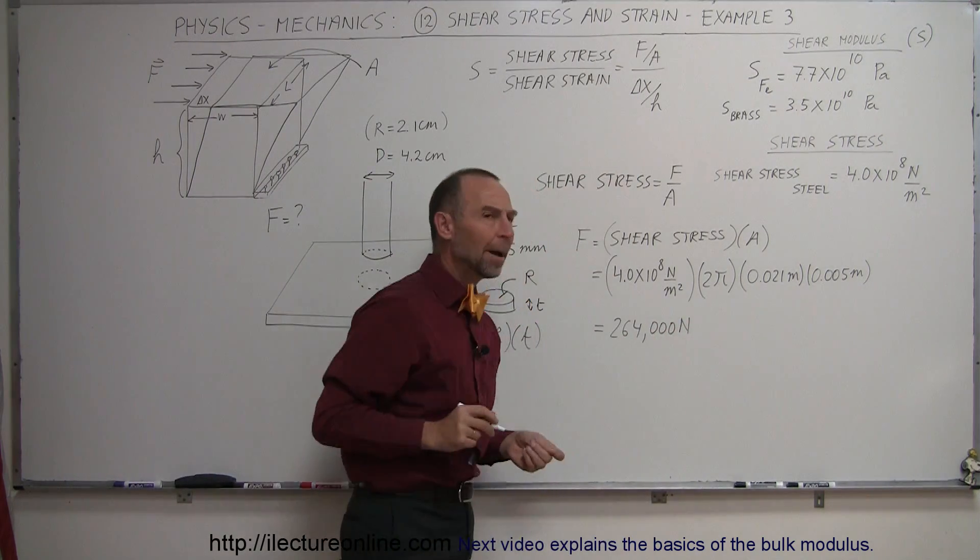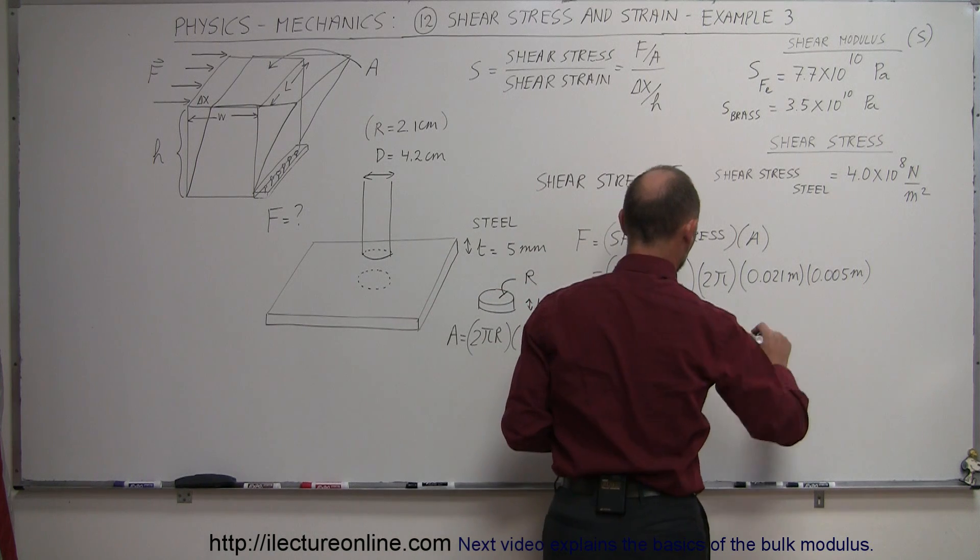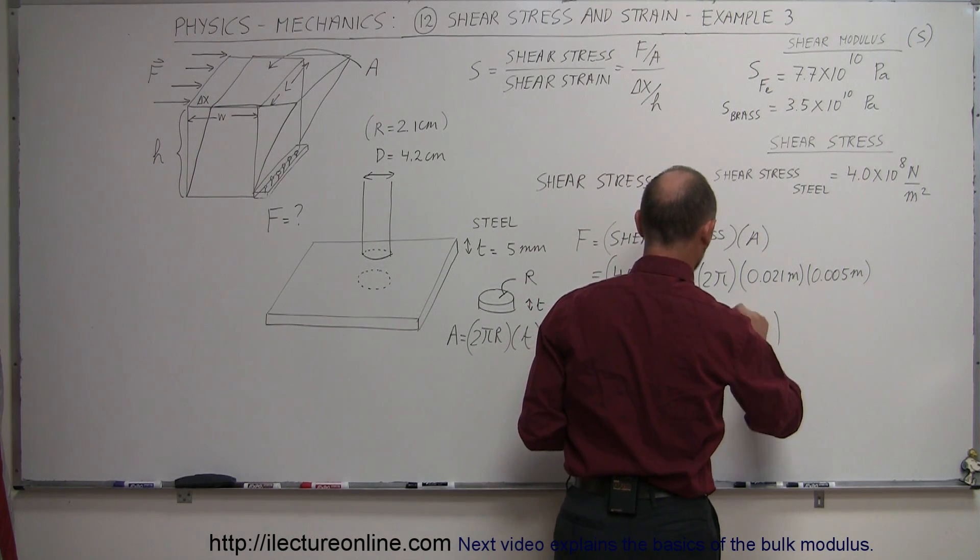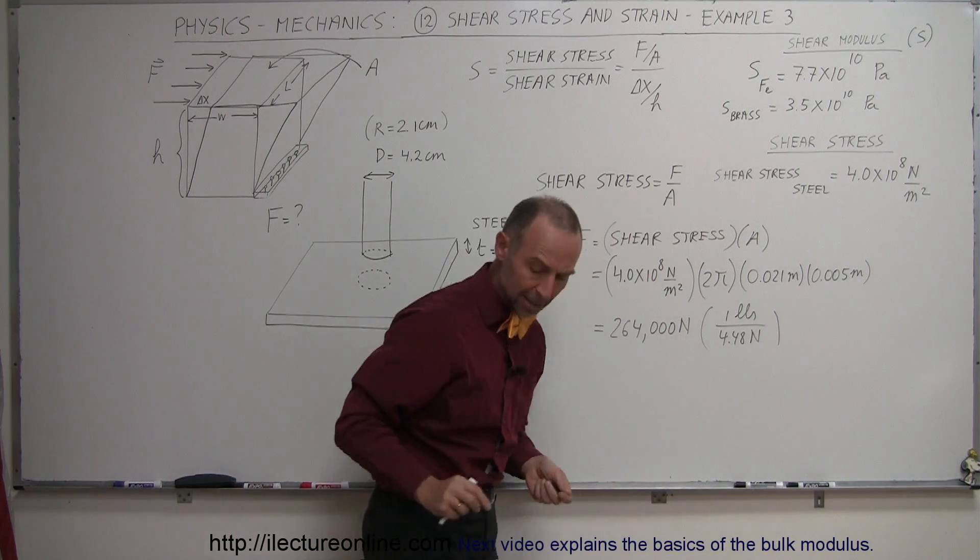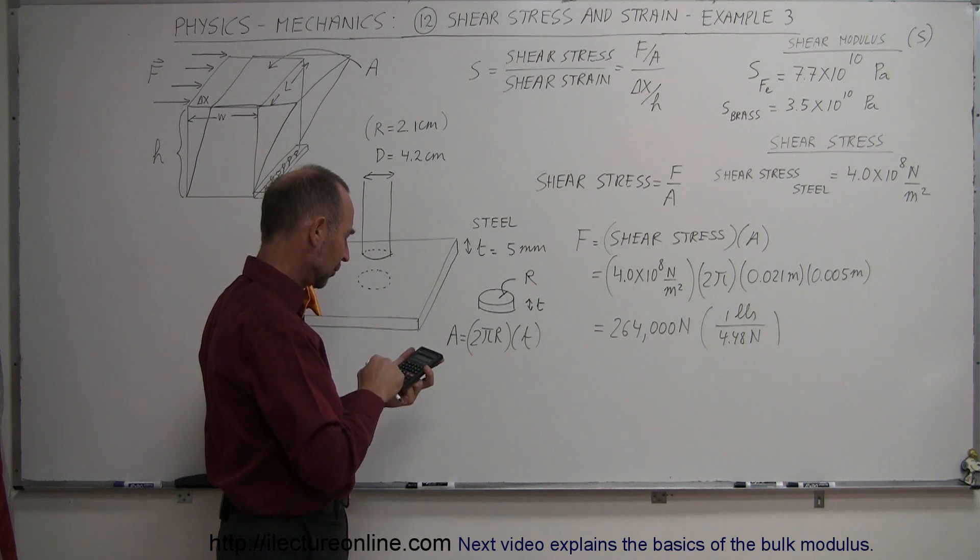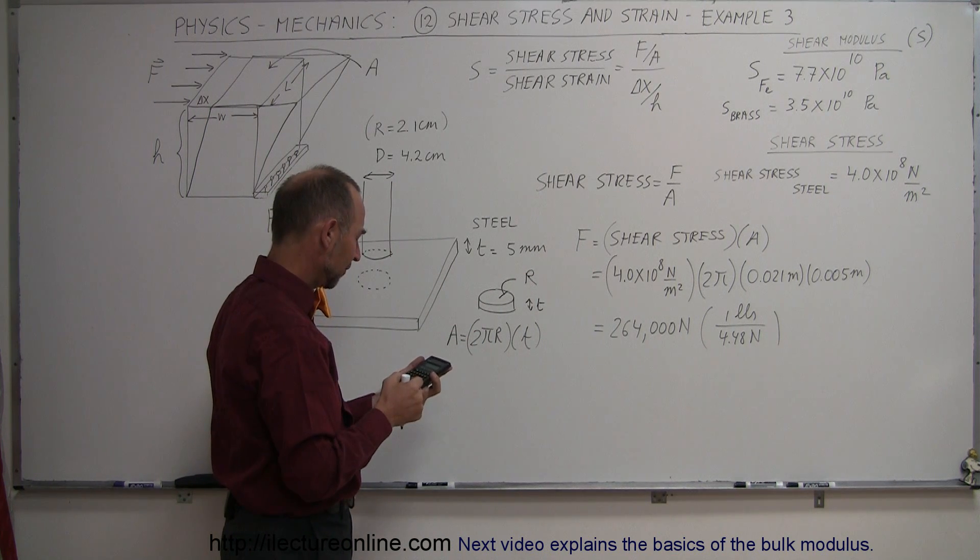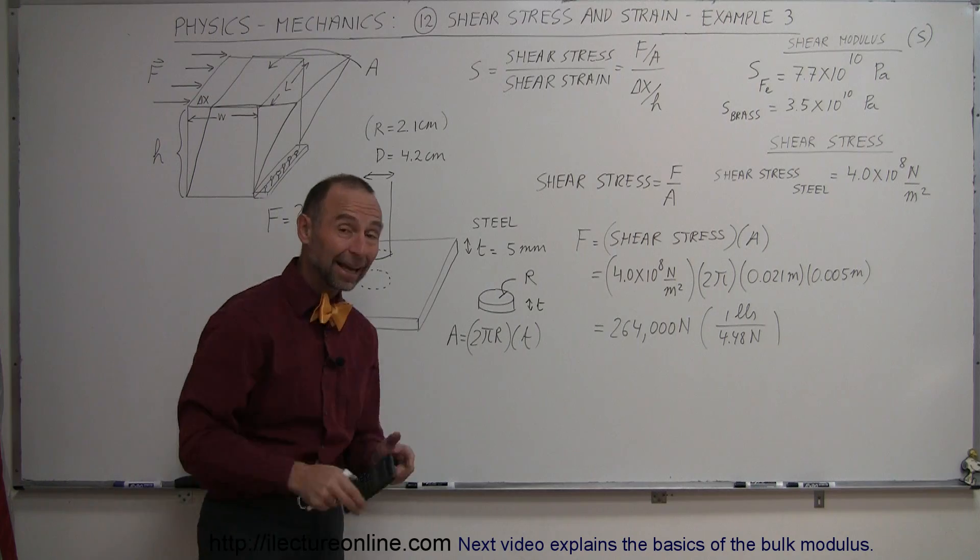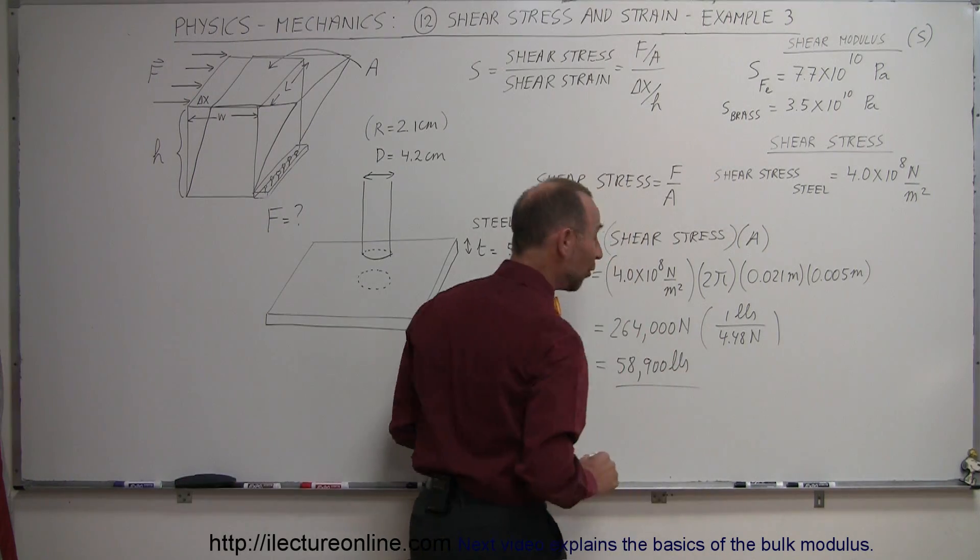Okay, convert that to pounds. Remember, because pounds means more to some people than others. So one pound is equivalent to about 4.48 newtons, roughly speaking. And so if we divide that by 4.48, we get 58,900 pounds. That's quite a bit of force.